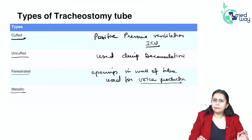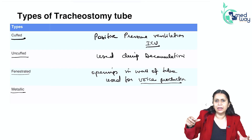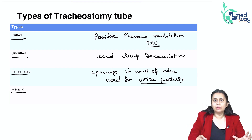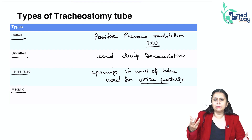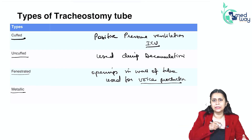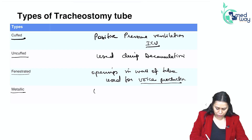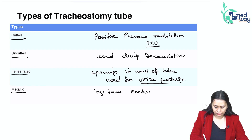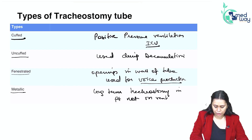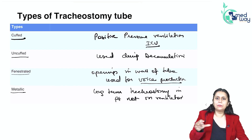Then we have the metallic tube. The metallic tube is not used for inpatients on a ventilator because it does not have a connector for ventilation. It is only used when the patient cannot maintain the airway — for example due to a mass or tumour — but can breathe on their own. It is used for long-term tracheostomy in patients not on a ventilator, just to keep their airway patent. It can be removed, washed, and reinserted.